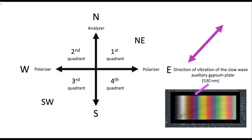In this position, the gypsum plate produces a retardation of 530 nm, which corresponds to the first order purple in the Michel Levy chart.